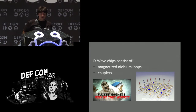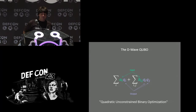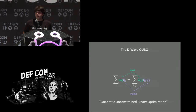The D-Wave is programmed by biasing the niobium loops and the couplers which govern their interactions. This formula here is how you represent that mathematically. Given A's and B's, which are all real numbers, the D-Wave attempts to find the assignment of Q's such that this formula is minimized. We normally work with Q being either zero or one, and when that's the case, this is known as a Quadratic Unconstrained Binary Optimization problem, or QUBO for short. If we could solve QUBOs pretty easily, it would be really useful, but the D-Wave doesn't always get the absolute minimum solution, so the company now calls their machine a heuristic for solving these sorts of problems.